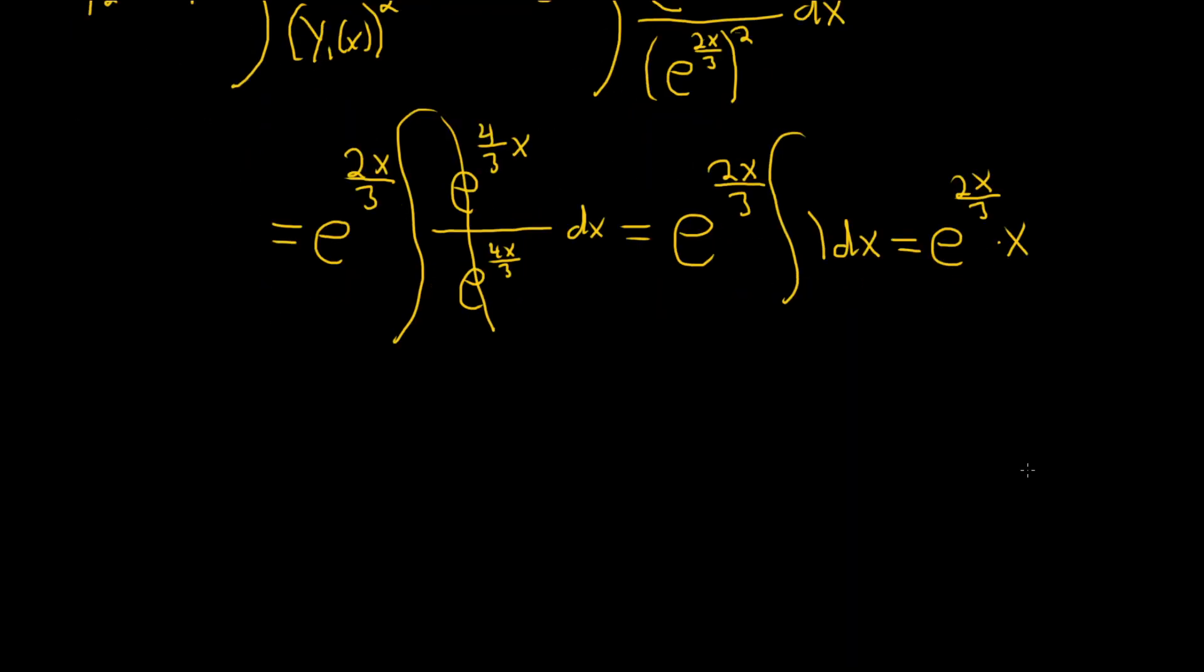Let's write it in a better way. Don't worry about the plus c in these problems. So y sub 2 is going to be x times e to the 2x over 3. And that will be the final answer. I hope this video has been helpful.